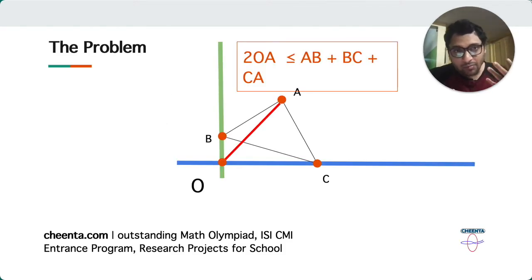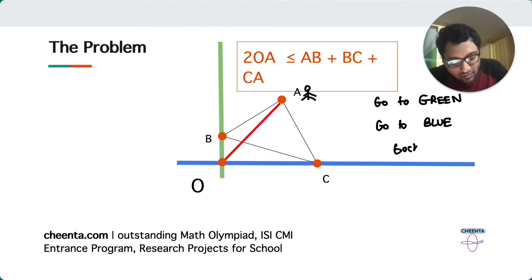So let me tell you what the problem is all about, the first problem that we will be discussing today. There are two lines like this, the green line and the blue line. And you are standing at the point A like this. You are standing here. You want to first go to the green and then to the blue and then back to A. So this is what you want to do.